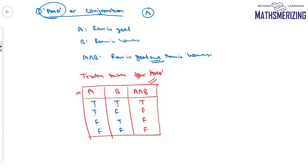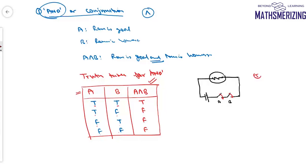Another way to understand the AND connective is using logical circuits. Suppose we have a light bulb connected to a battery with two switches A and B in series. The bulb will glow only when both switch A and switch B are closed. A closed switch represents true and an open switch represents false. So the bulb glows only when both statements are true — which matches the AND truth table.